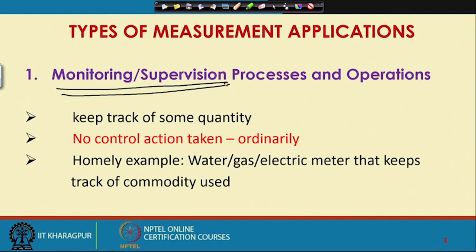There can be various types of instruments which can locally indicate the values of measured variables at the site of measurement, or there can be instruments which send out signals about the measured medium to the control room. Sitting at the control room you will know what is the temperature, pressure, and flow rate in different process units in your industry. Monitoring means keeping an eye on those process variables.